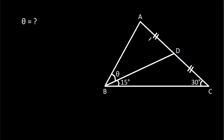In this video, we have been given that AD is equal to CD, angle ACB is 30 degrees, angle CBD is 15 degrees, and angle ABD is theta. We have to find theta.